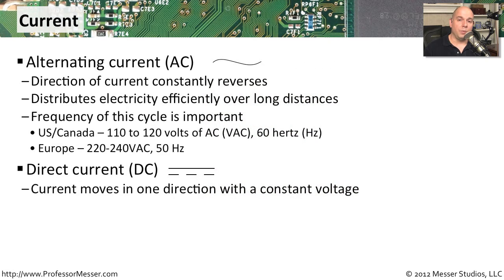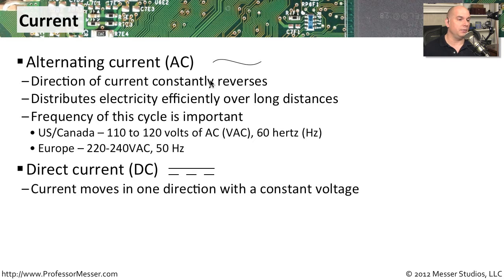When we start working with power, you'll also notice there are two different kinds of current. There is alternating current, referred to with a wavy line symbol, meaning the direction of the power is constantly reversing — it goes from top to bottom and back again in a single cycle. This is very efficient for sending power over very long distances, which is why the power coming out of your wall is alternating current.